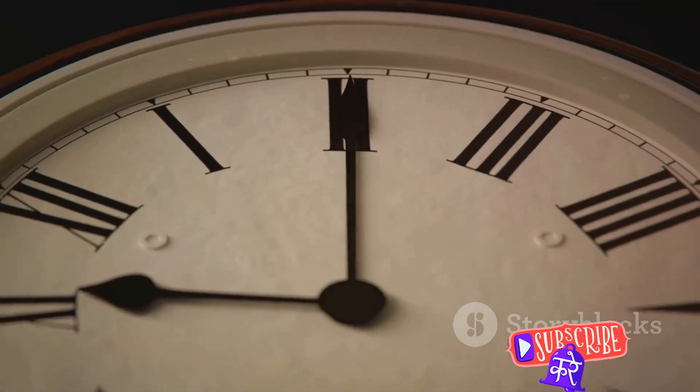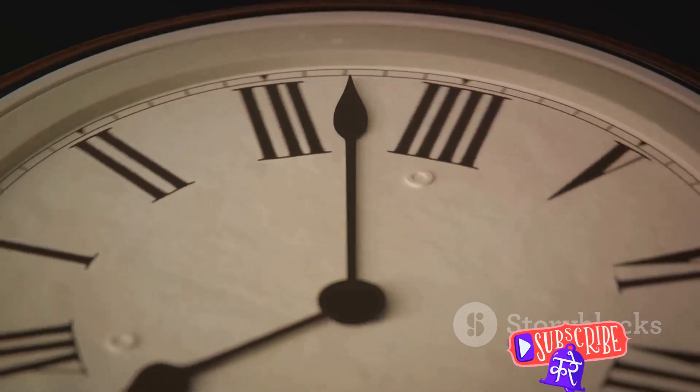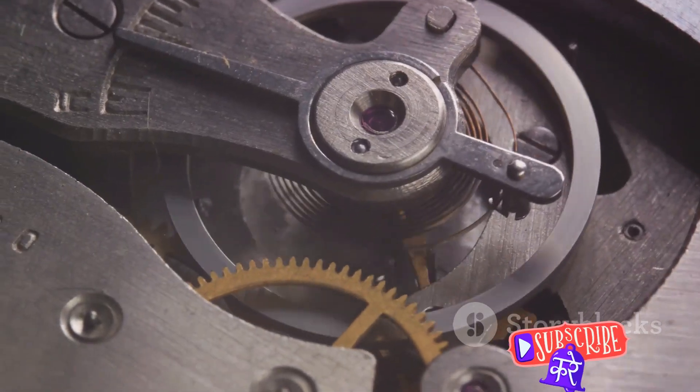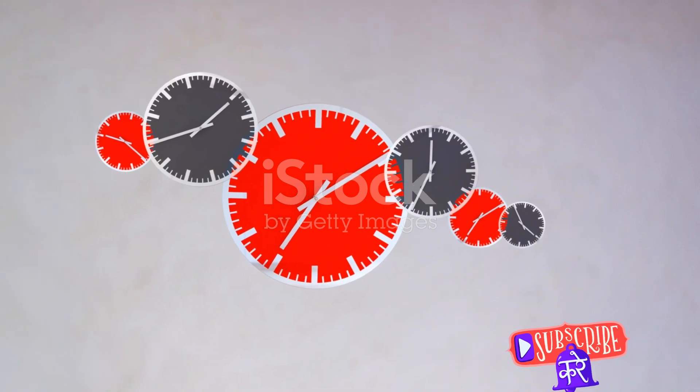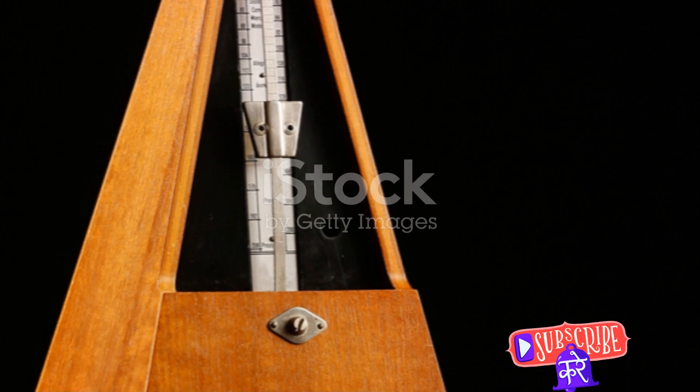Then, there's the world of electric clocks. Have you ever wondered how your wall clock keeps time so accurately? That's the magic of synchronous motors. They ensure that the second-hand ticks at the same rate, every single second of the day.